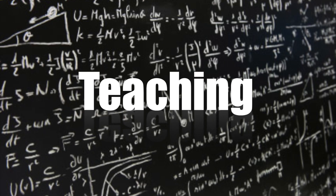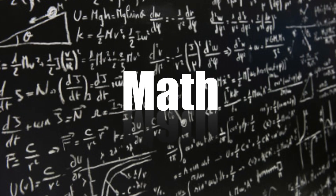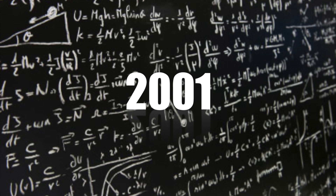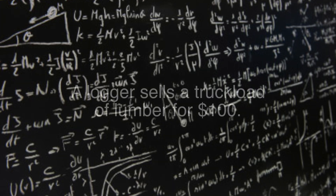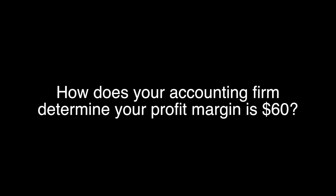Teaching math in 2001. A logger sells a truckload of lumber for $100. His cost of production is $120. How does your accounting firm determine your profit margin is $60?